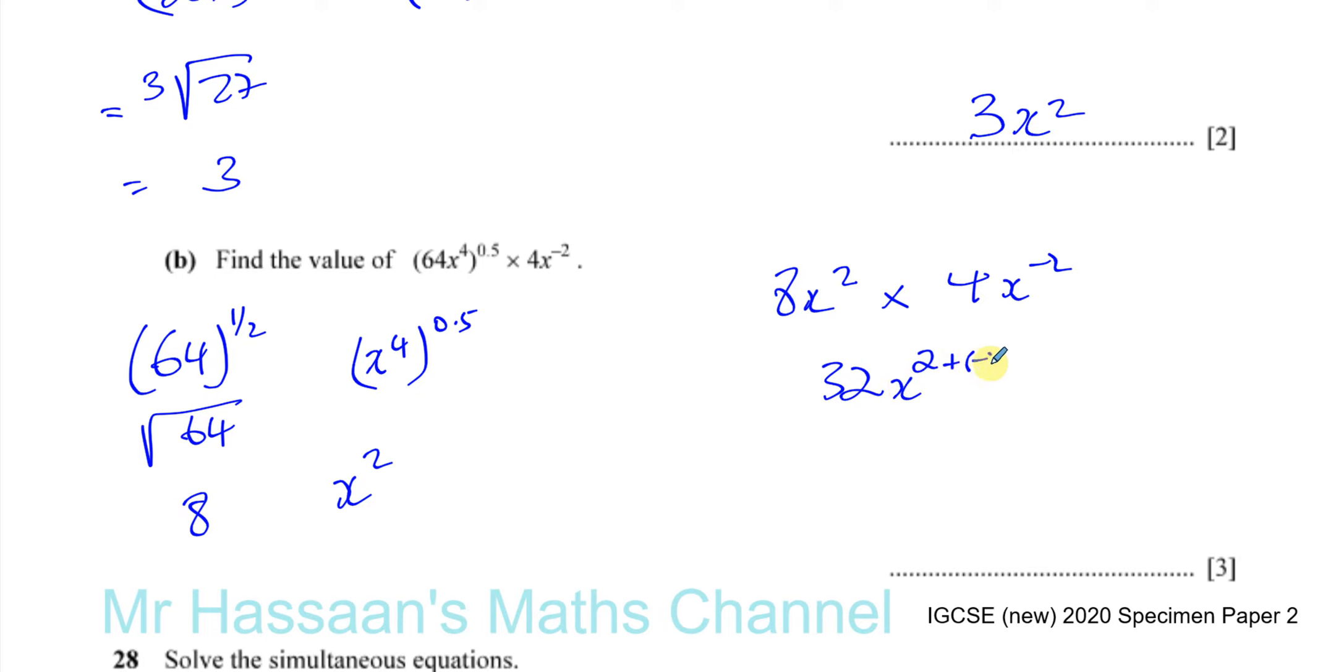They cancel out because you have to add the powers. You'll have x to the power of 2 plus minus 2, which gives you 0. So you get 32x to the power of 0, which is 32. X to the power of 0 is 1, remember. So there's the answer to part B.